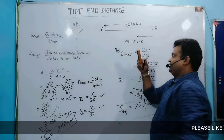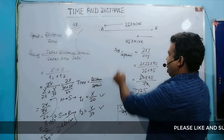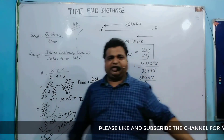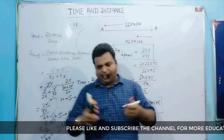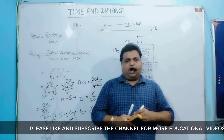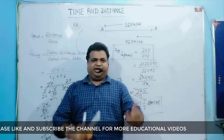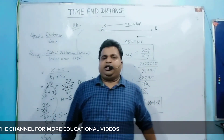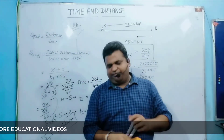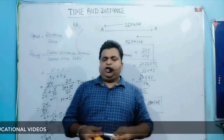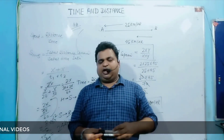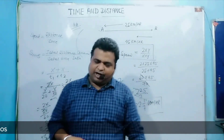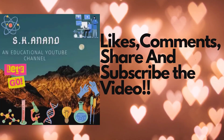So this is your average speed by this formula. This is a very, very important formula: whenever the distance is the same and the onward and return journeys have different speeds, this is the wonderful formula to find out the value in seconds. Thank you so much for watching this video. Bye.